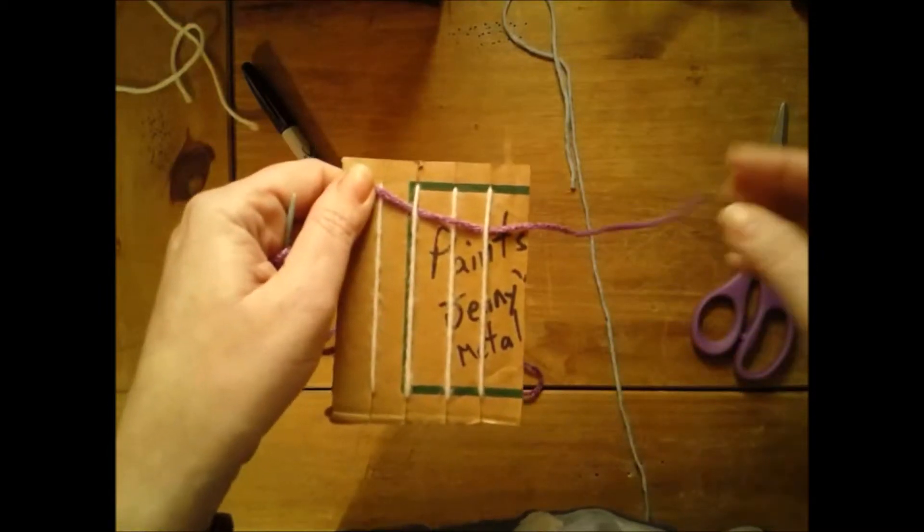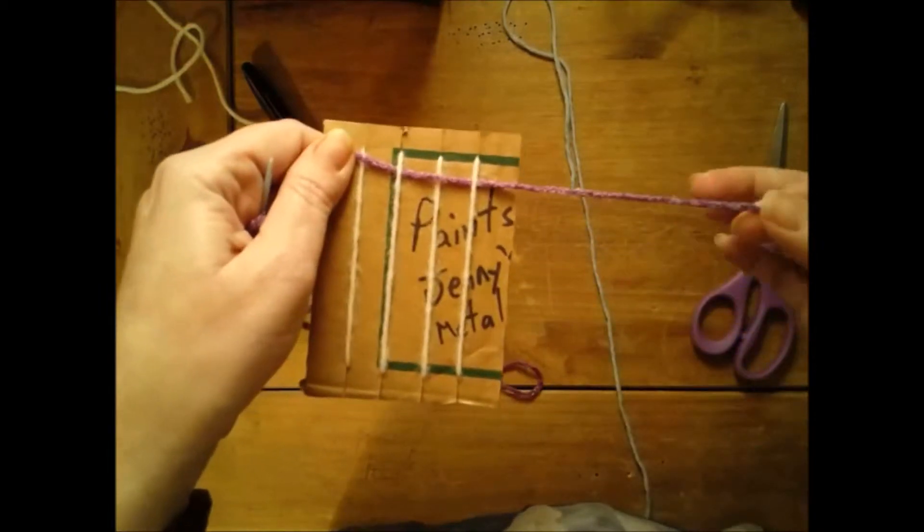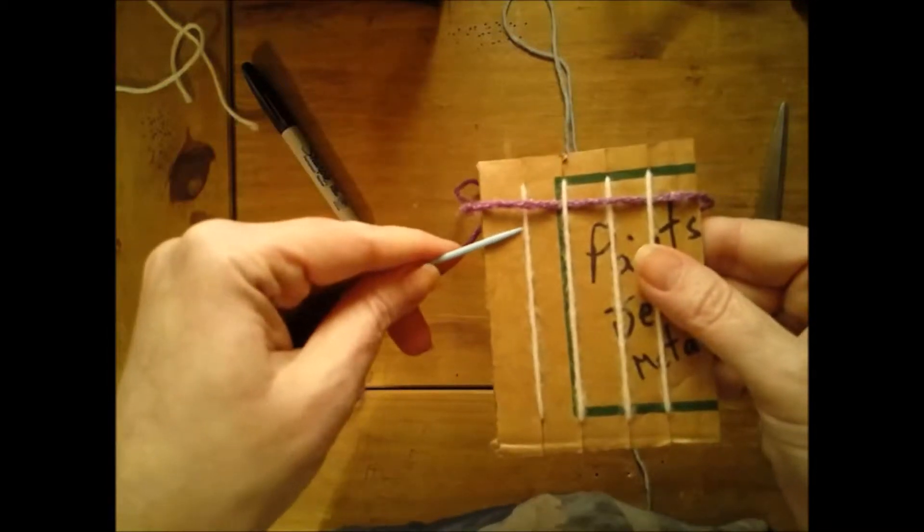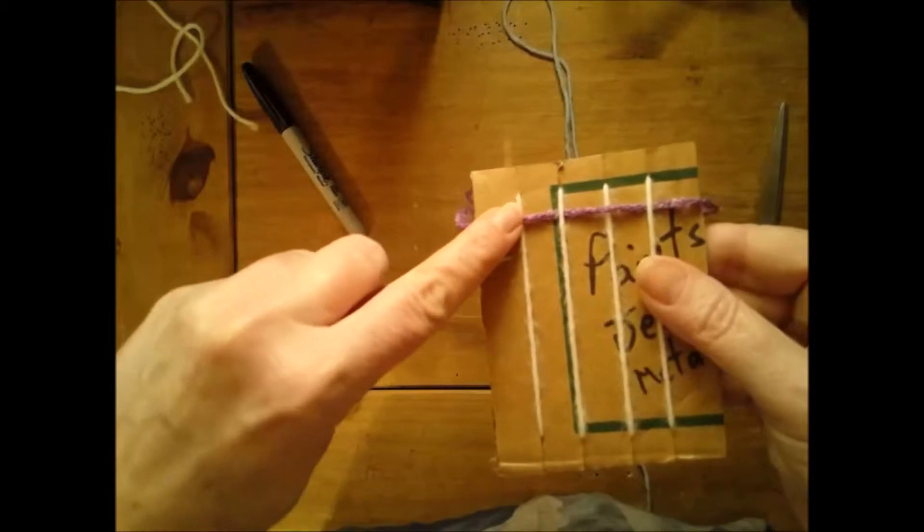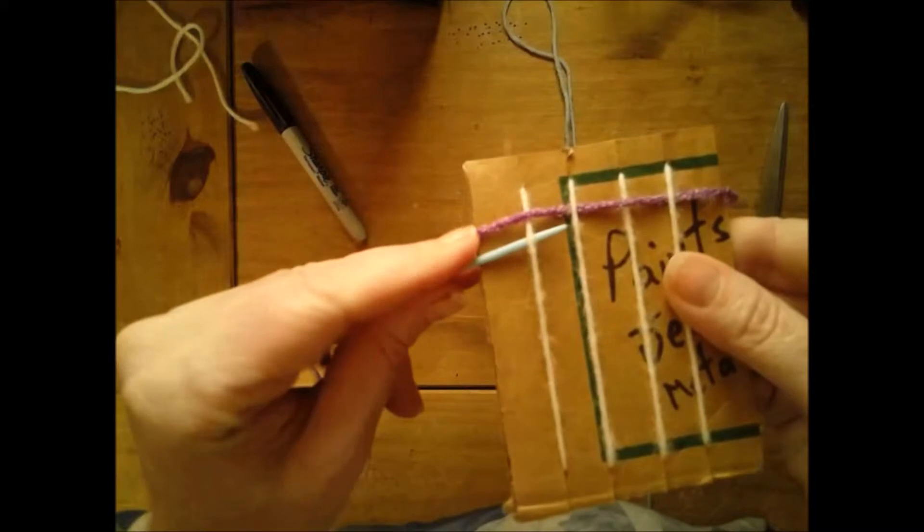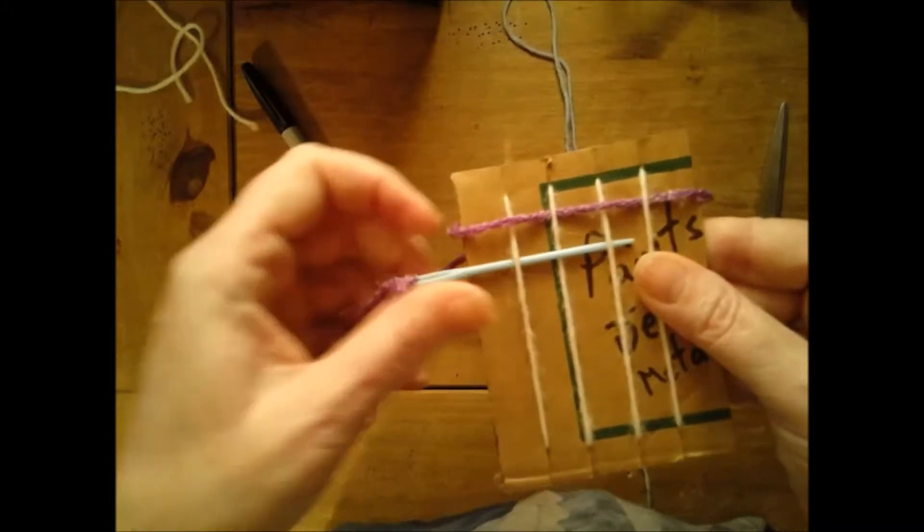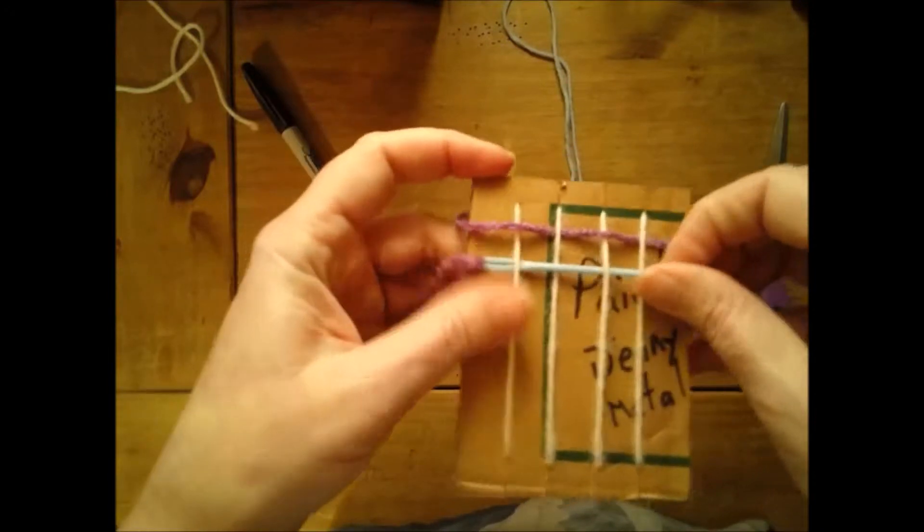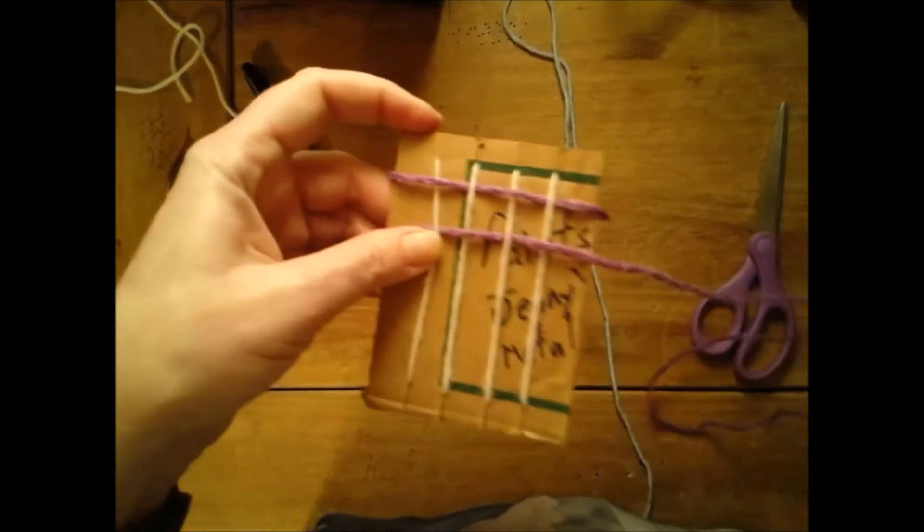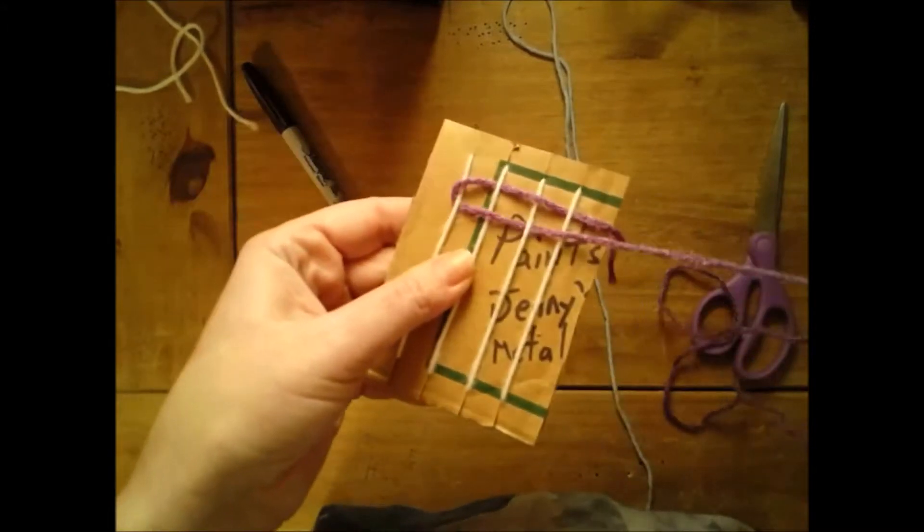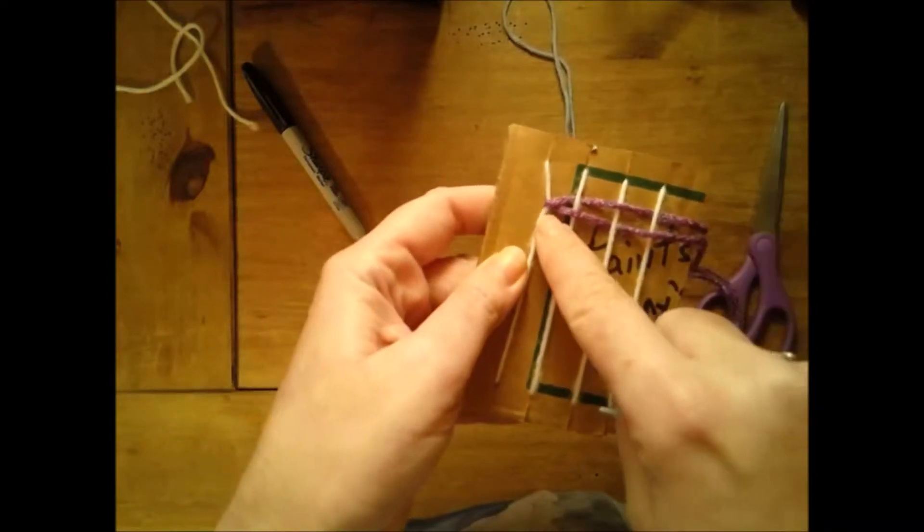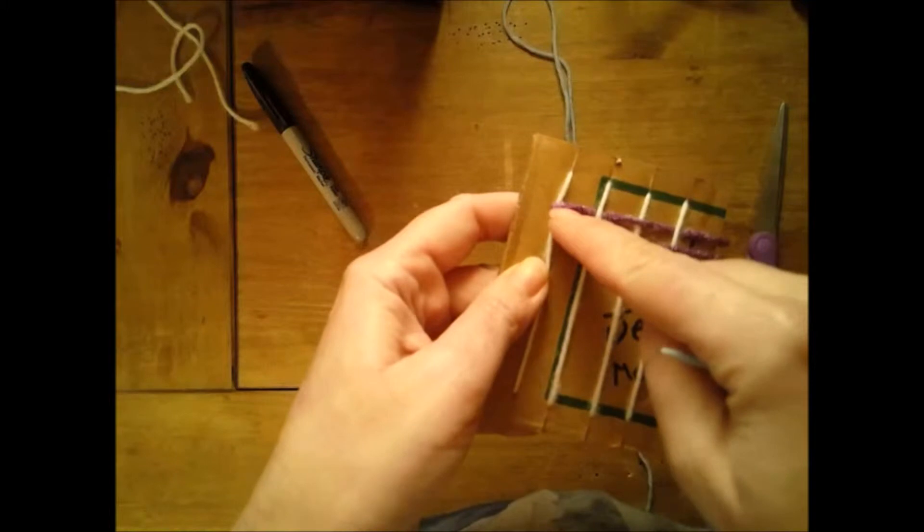You want to leave a little bit of a tail because we're going to have to tuck that in at the end. Then when you go to the next row, you're doing the opposite. So it's going over right here, now I'm going to go under, over, under, over, and I'm going to pull it all the way through until it touches my warp thread. I don't want to pull it too tight because see what happens to this warp thread? It starts to get squished in.